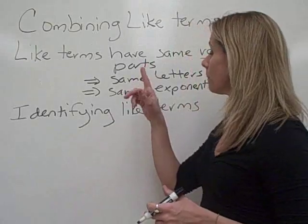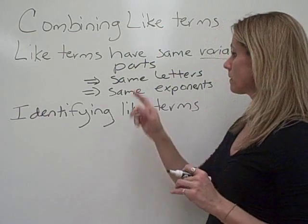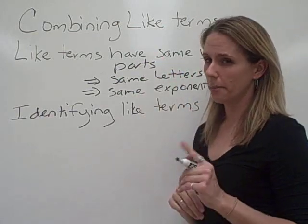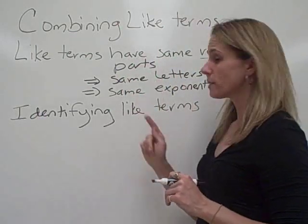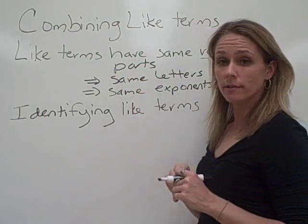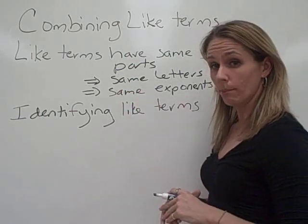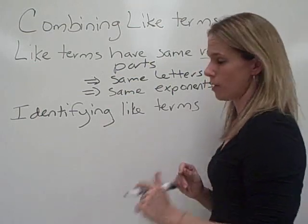So this topic is combining like terms. Now like terms have the same variable parts, and that word variable is very important. It'll come back to us. So to have like terms, they need to have the same letters, and those letters have to have the same exponents for each term. So let's take a look at some and decide whether they are like terms or not.